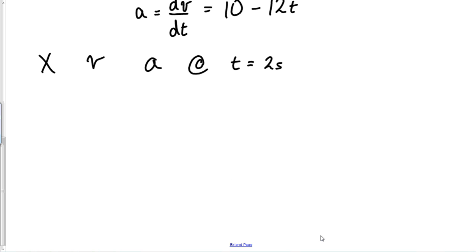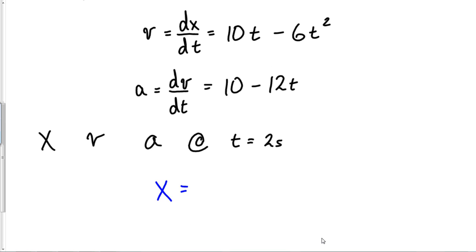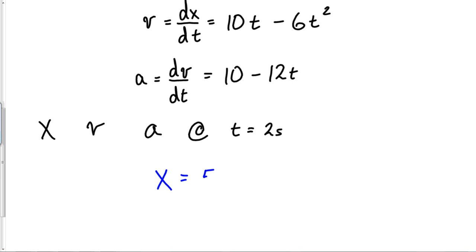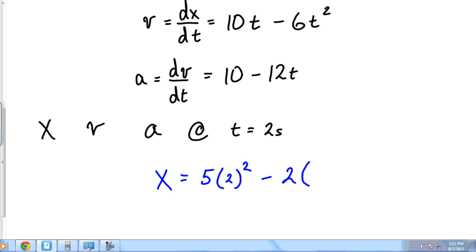Let's go to that first problem. x equals our original position equation 5t² - 2t³. So this would be 5 times 2² minus 2 times 2³. So 2² is 4 times 5 is 20 minus 2³ is 8, so minus 16 means 4.